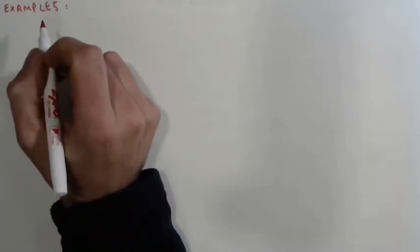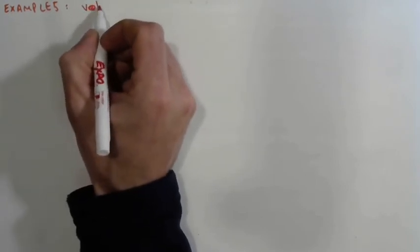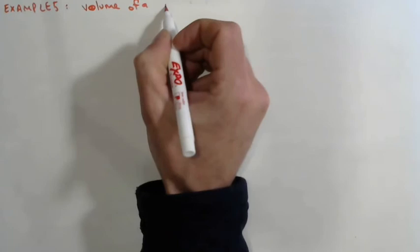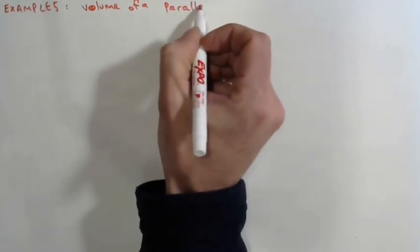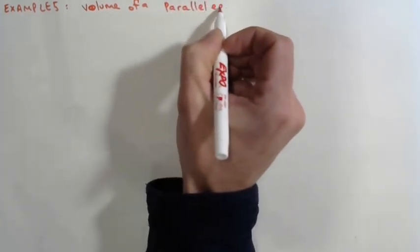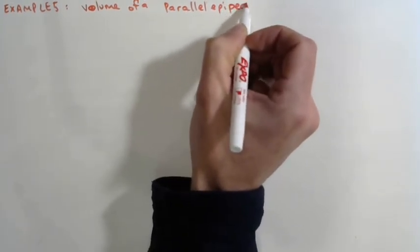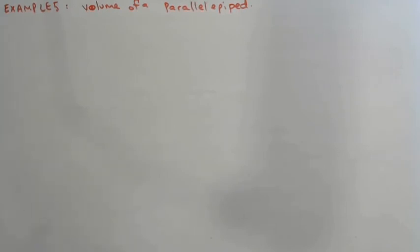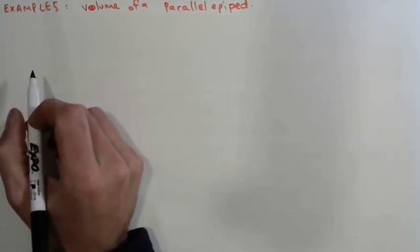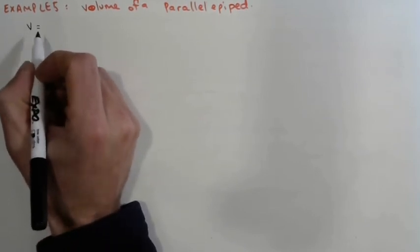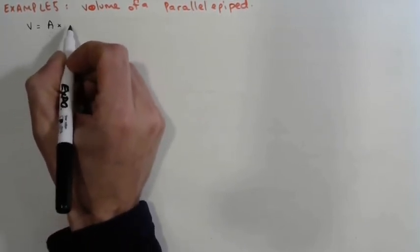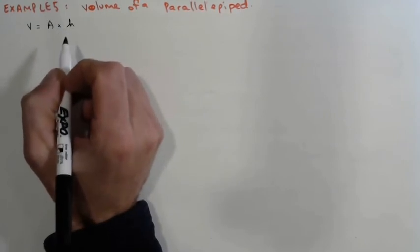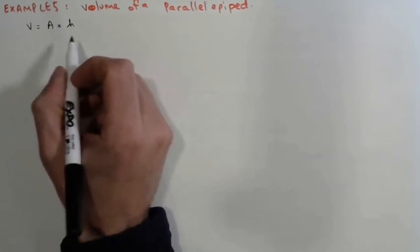Example 5 deals with the volume of a parallelepiped. The volume equals area of the base times the height: V = A × H.